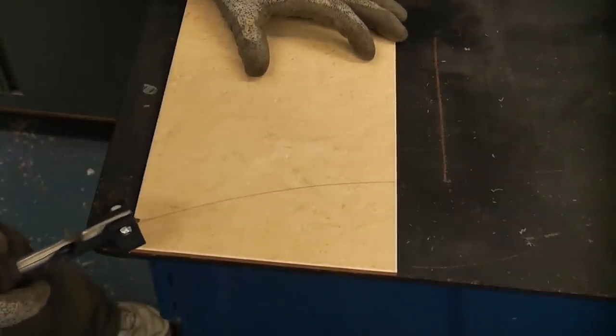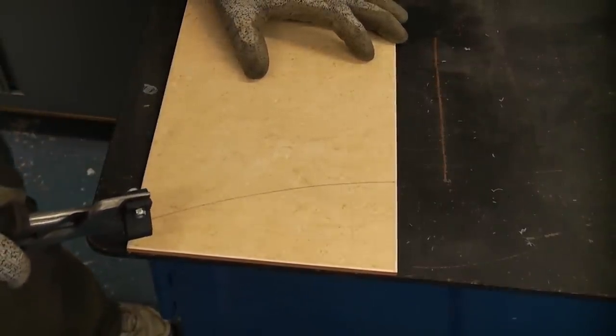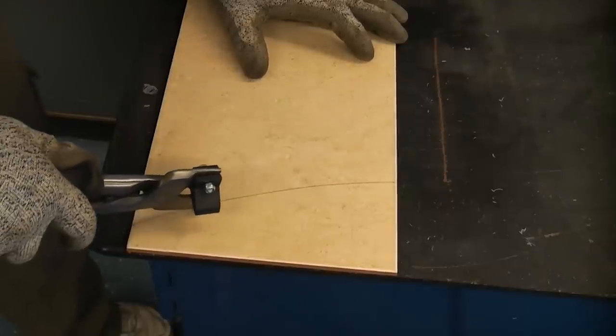We can now get the pliers, get the cutting wheel, place it on the line and apply a firm pressure whilst following the pencil line.